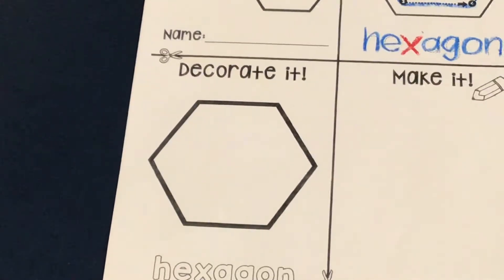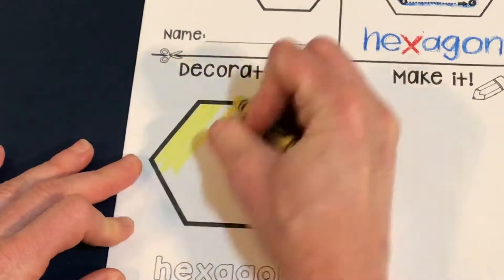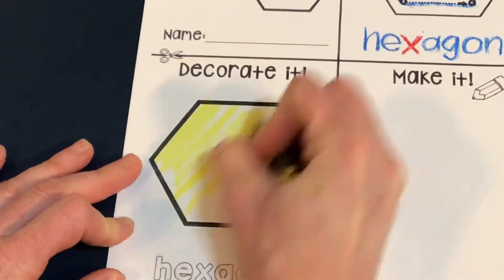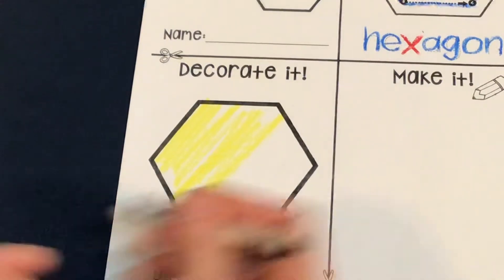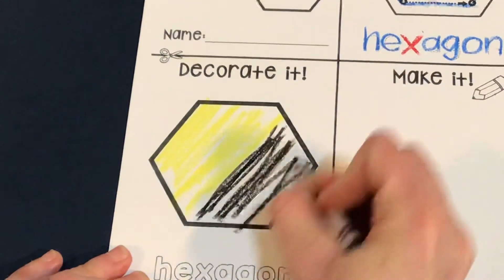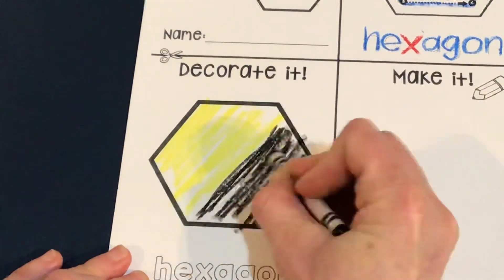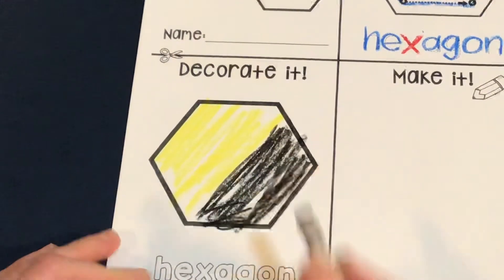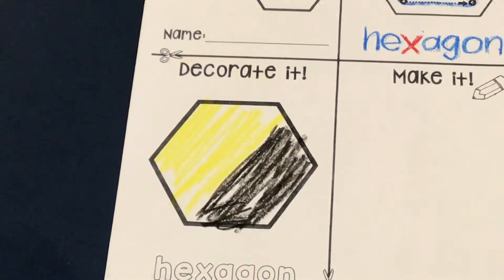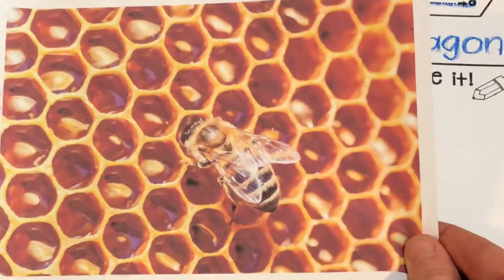The next one, you are going to decorate the hexagon. Well, I love the fact that hexagons are the shape of honeycombs, so I'm going to color mine yellow and black. Why do you think I colored it yellow and black? Yeah, because those are the colors of bees, right? Yellow, black. It's yellow and black.